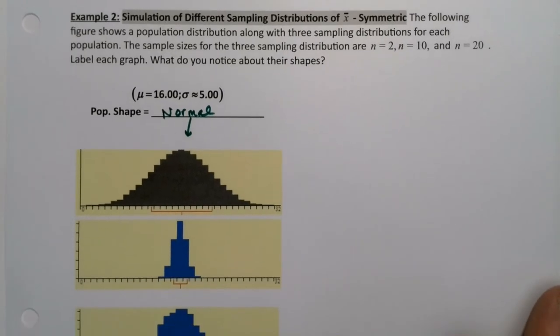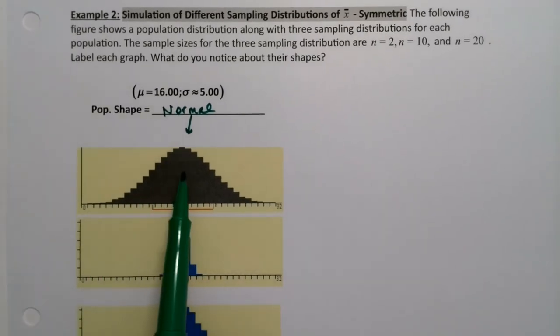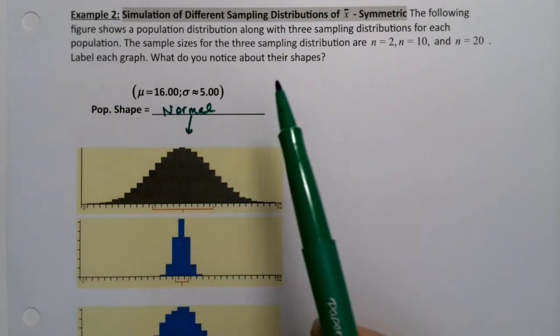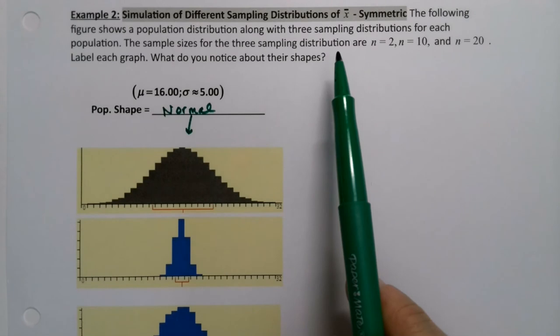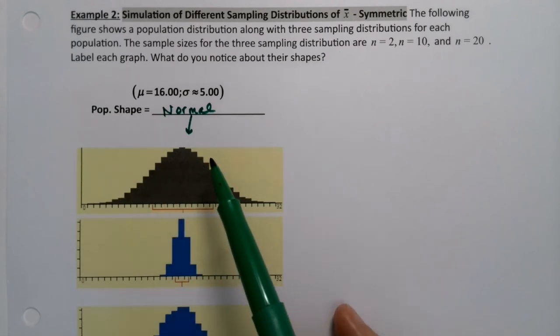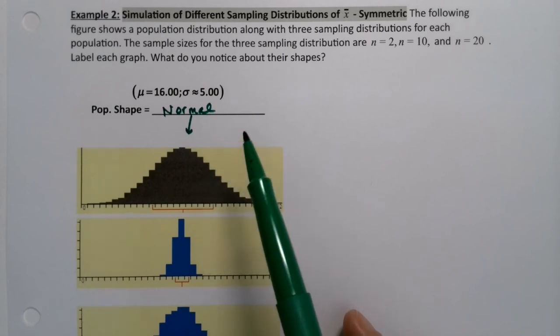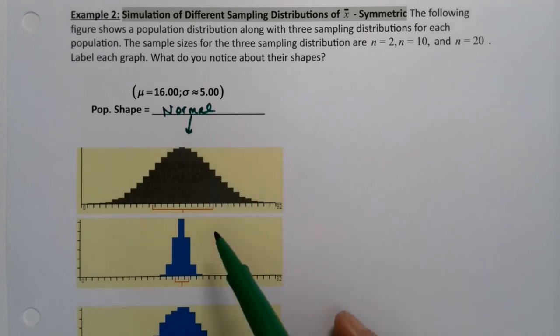We have here a population distribution that is normal, right? That's a normal distribution at the start. And we take sample sizes for three sampling distributions. So we're going to draw samples from this population that are size 2, 10, and 20. And we want to figure out which one is which. Which graph is 10, which graph is 20, and which graph is 2.